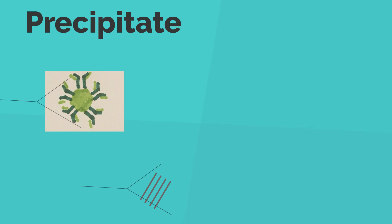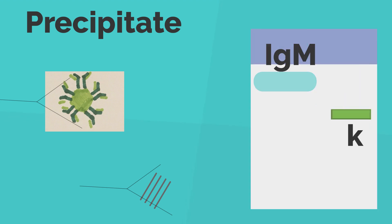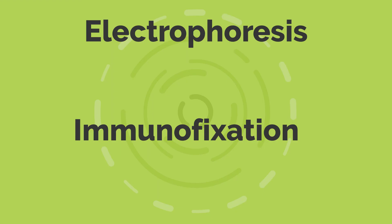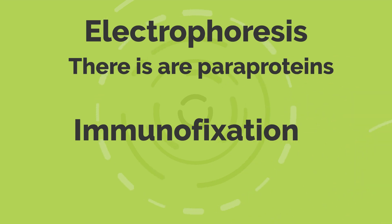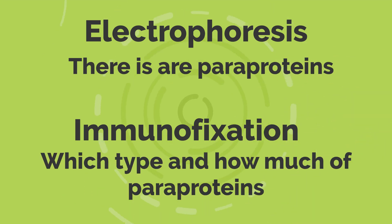Immunofixation tells you two things: first, what is the quantity of the heavy chain — IgM, IgA, or IgG? And second, what is the quantity of the light chain component, in the form of either kappa or lambda light chains? Hence, electrophoresis tells you that there are periproteins, and immunofixation tells you which type and how much of periproteins there are in your body.